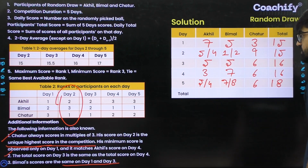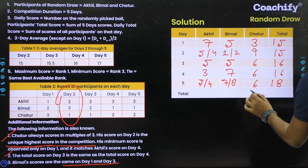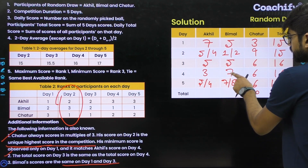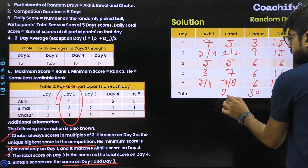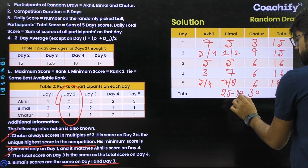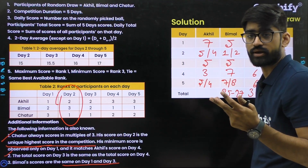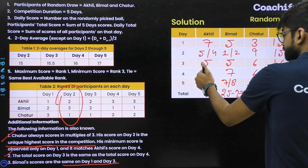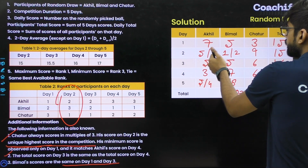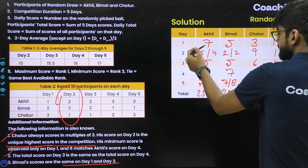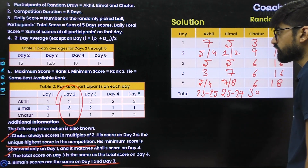Calculating total score ranges: For Chatur, the sum is 3+9+6+6+6 = 30 exactly. For Bimal, taking minimum values across the two cases gives a minimum of 25 and maximum of 27, so possible totals are 25, 26, or 27. For Akhil, the minimum possible total is 23 and the maximum is 25. These are the ranges we can determine from the available information.